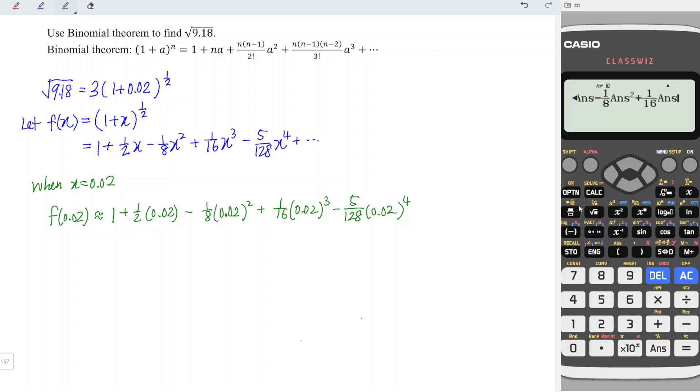And minus 5/128 and we times answer to the power of 4. Let's press equal. And we obtain 1.00995, rounded to the nearest five decimal places.